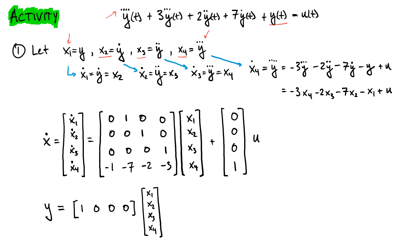We stop here knowing that when we take the derivative of X4, we get Y quadruple dot, and that brings us back to the original equation. We don't define X5 equal to Y quadruple dot because we don't know its derivative — that would be Y to the fifth derivative — and we have no information about that. The easier rule to remember: if you have four as the highest order, you only need four states to represent the system.